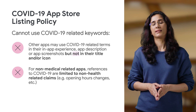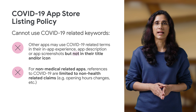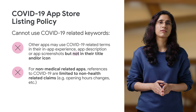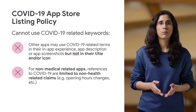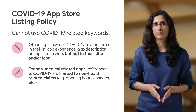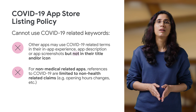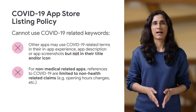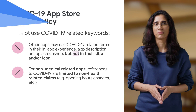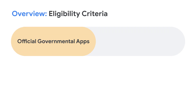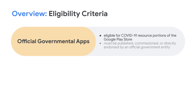For non-medical-related apps, references to COVID-19 are limited to non-health-related claims, such as opening hour changes, sharing tips on activities to do at home, providing commentary on the economic or social impact of COVID-19, etc. Of course, the official government apps are eligible for the COVID-19 resource portion of the Google Play Store, and the following categories of apps must be published, commissioned, or directly endorsed by an official government entity.